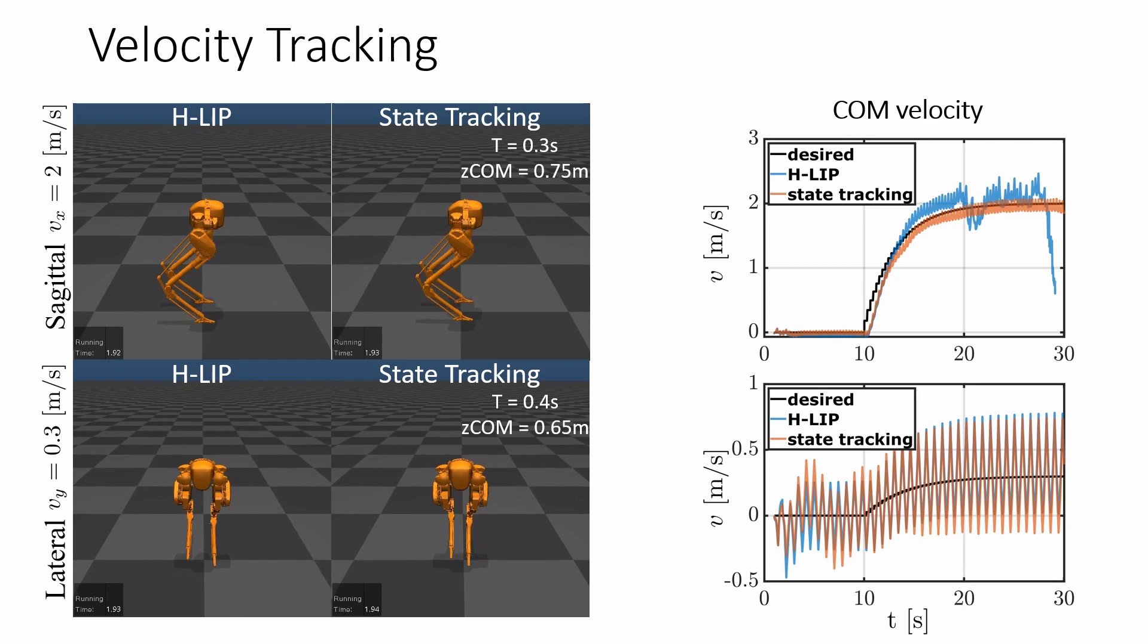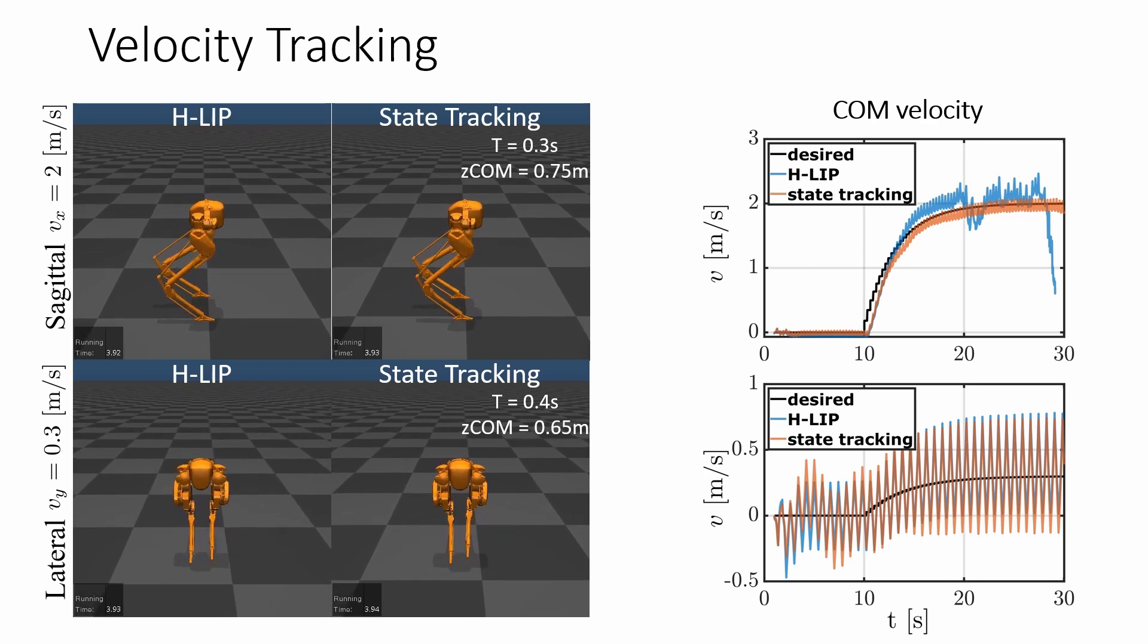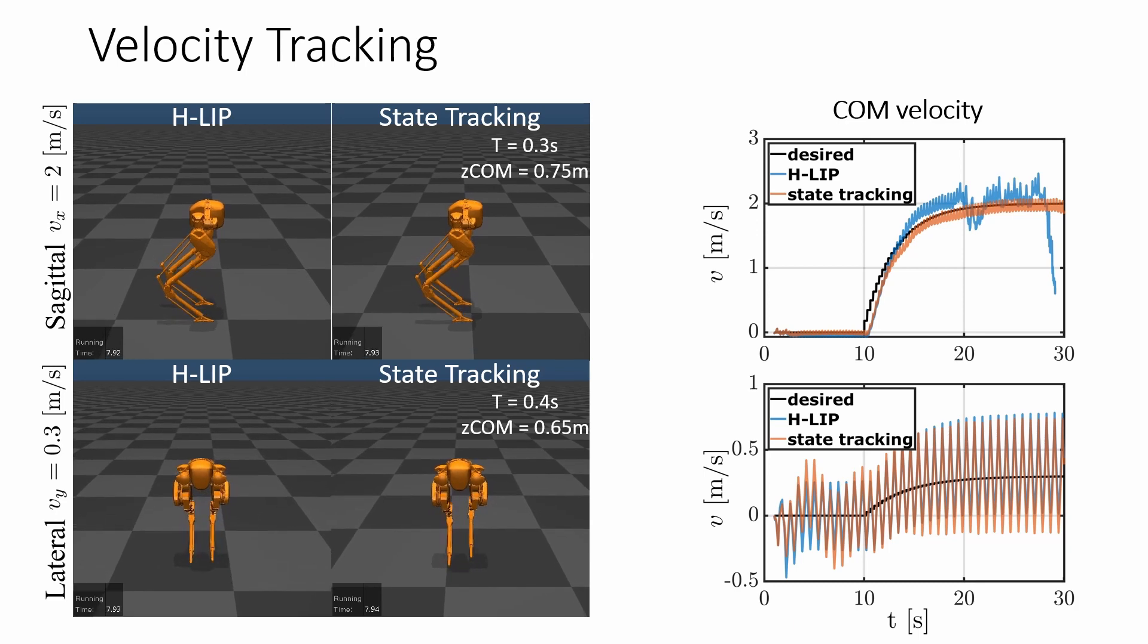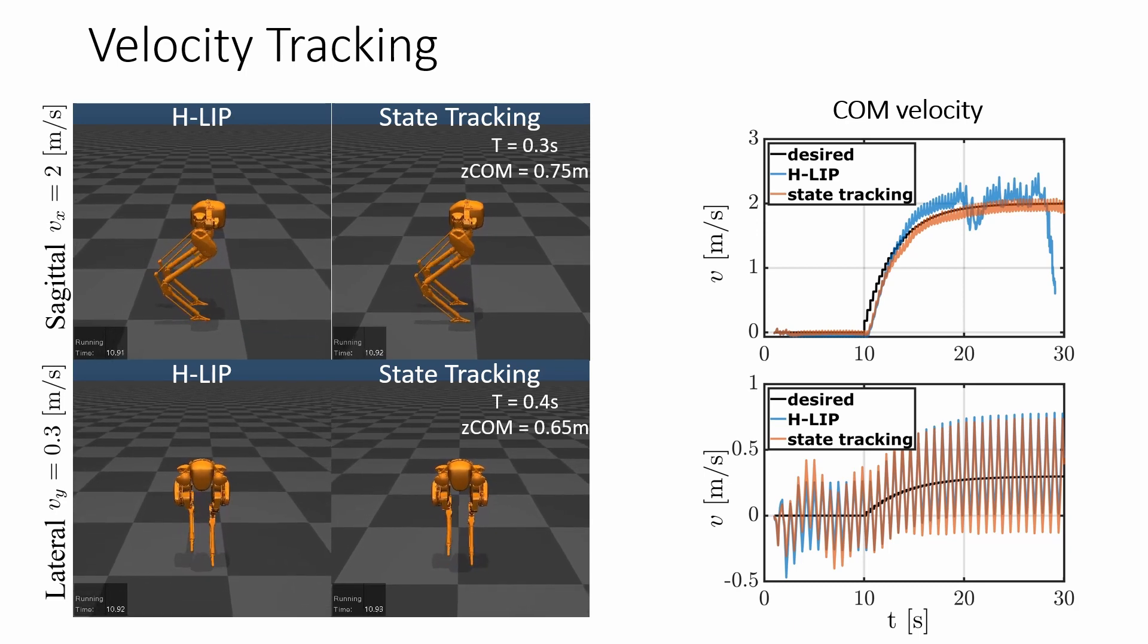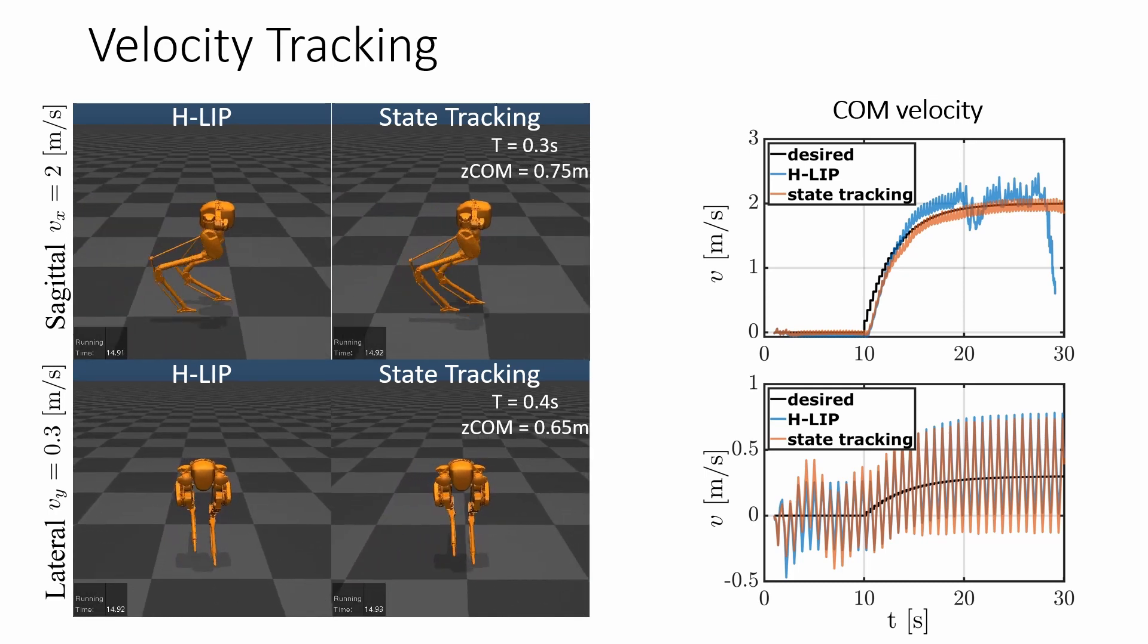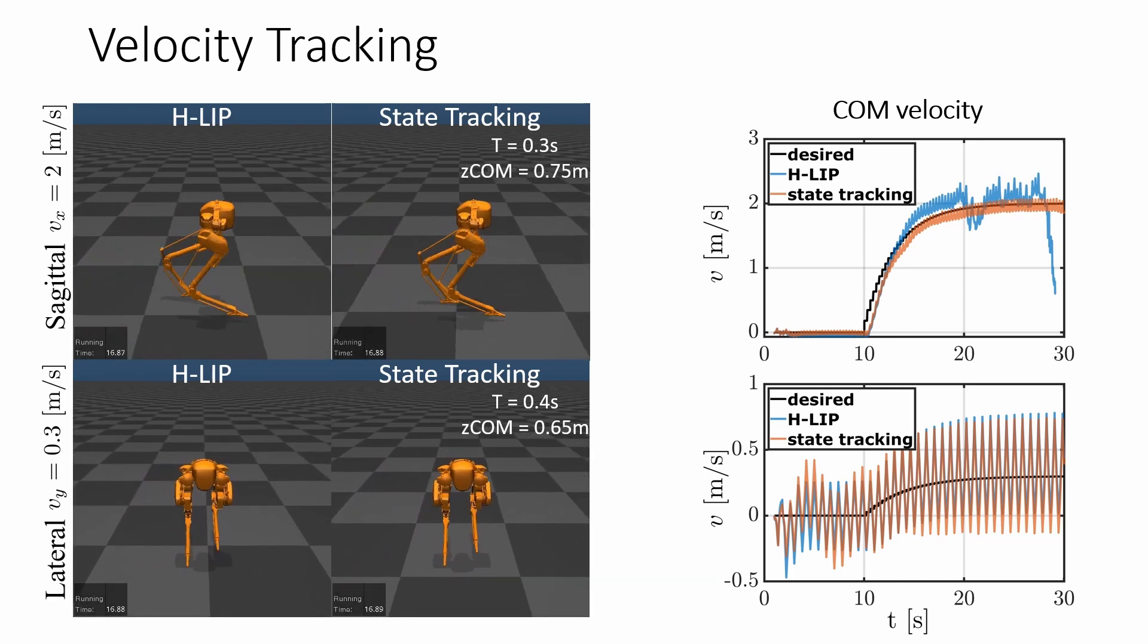Now let's take a look at the results. We first compare the velocity tracking performance for different gait parameters. For the initial 10 seconds, CASI is commanded to step in place, then its commanding velocity gradually increases to 2 m per second for the sagittal plane and 0.3 m per second for the lateral domain.